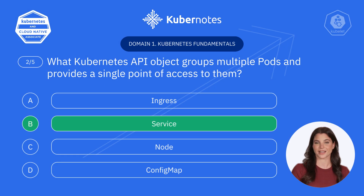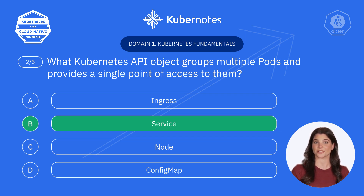That's right, it's B. Service. Services act as the go-between, making sure requests reach the correct pods. They're like the traffic controllers for your Kubernetes cluster.